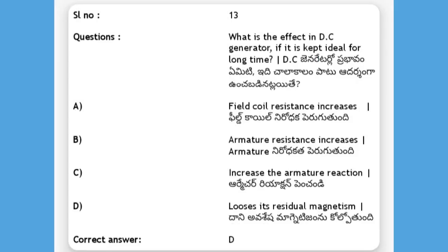What is the effect on a DC generator if it is kept idle for a long time? Options: field coil resistance increases, armature resistance increases, increase in armature reaction, loss of residual magnetism. The answer is D, loss of residual magnetism. If a DC generator is kept idle, it loses its residual magnetism.